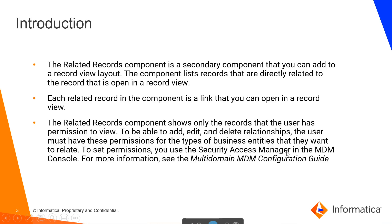Introduction. The Related Record component is a secondary component that you can add to a record view layout. The component lists records that are directly related to the record that is open in a record view. Each Related Record in the component is a link that you can open in a record view. The Related Record component shows only the records that the user has permission to view. To be able to add, edit, and delete a relationship, the user must have permission for the type of business entity that they want to relate.